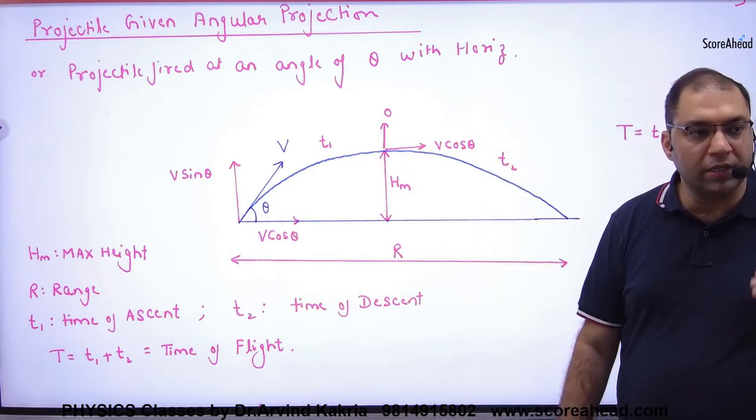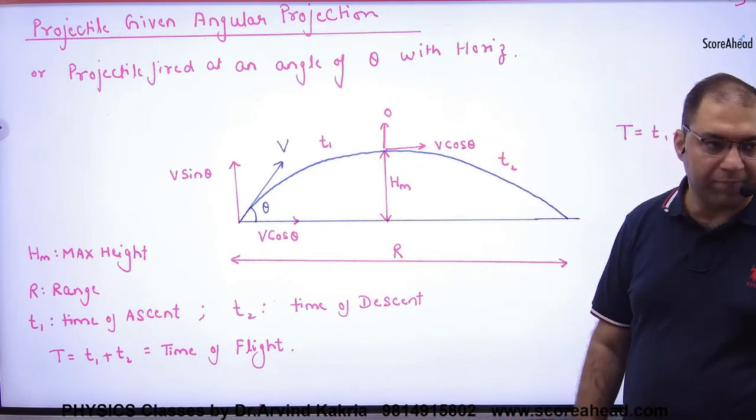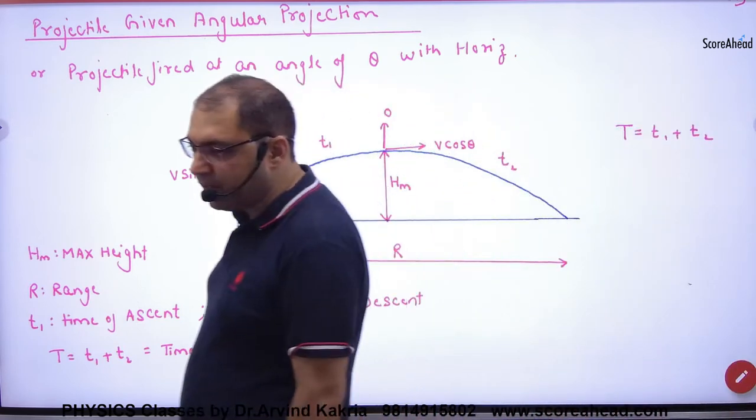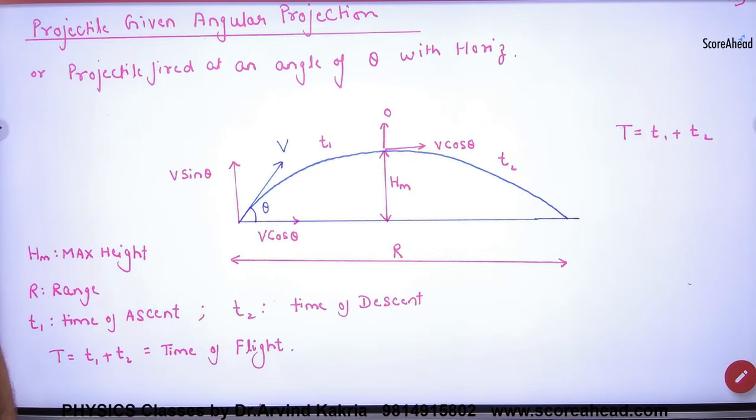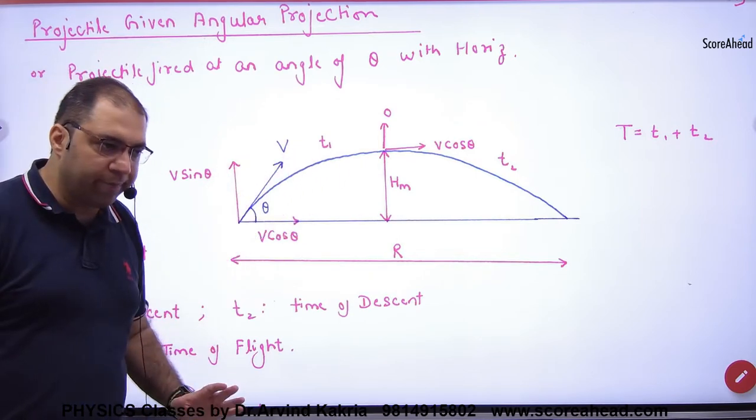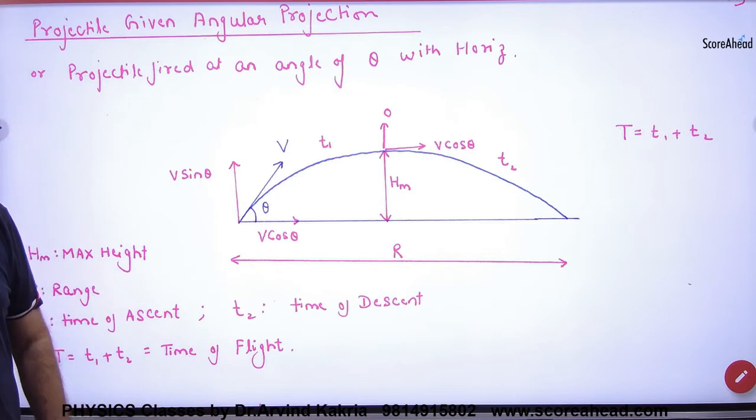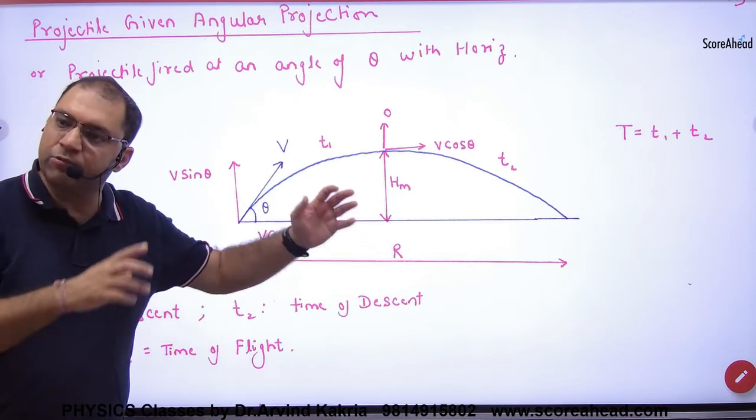How much time when the body came to the topmost point? That time t1. What do they say? Time of ascent. When the expression comes to maximum height, then you have to draw your diagram. If the expression for time of ascent, then the diagram will also be drawn in every situation.